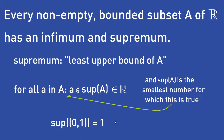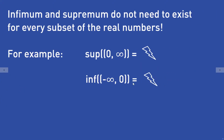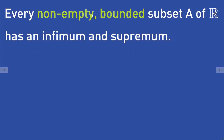The supremum and infimum of a subset A do not need to exist for every subset of the real numbers. For example, the supremum of the open interval (0, ∞) doesn't exist because you can't find an upper bound for this interval. On the other hand, the infimum of the open interval (−∞, 0) also doesn't exist because you can't find a lower bound for this interval. But in the case of a bounded and non-empty subset A of the real numbers, the infimum and supremum always exist.